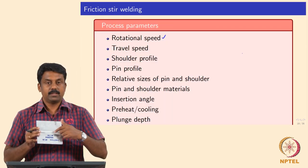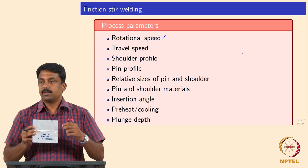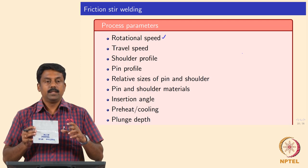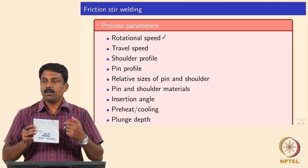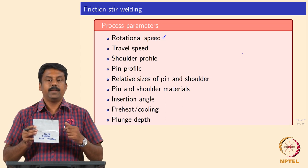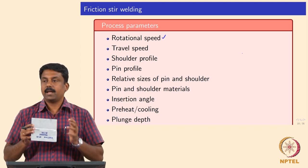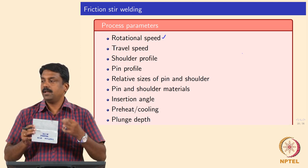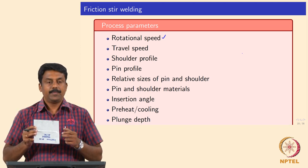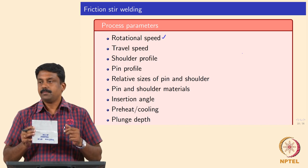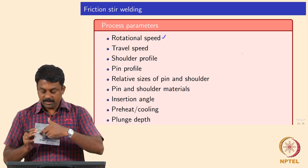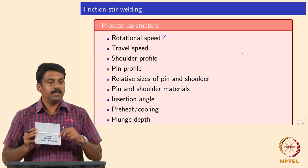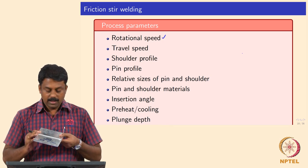The weld metal properties can be changed by changing all these parameters: speed of rotation, travel speed, shoulder profile, pin-to-shoulder ratio — all influence frictional heat generation, mechanical deformation, and material flow across the interface, which all affect weld formation.